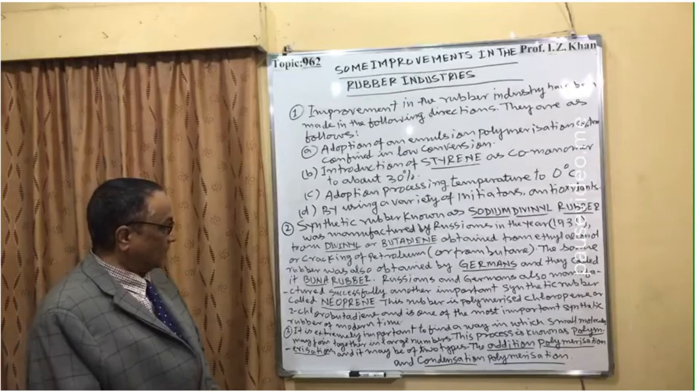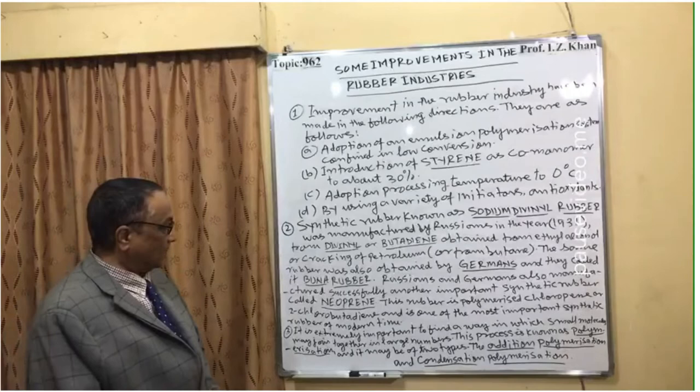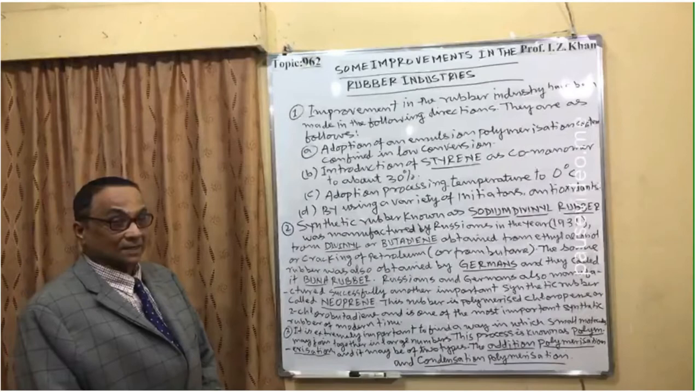Russians and Germans also manufactured another important synthetic rubber called neoprene. Neoprene is the most important synthetic rubber in modern times. This rubber is polymerized chloroprene, or two-chlorobutadiene, and is one of the most important synthetic rubbers of the modern era.